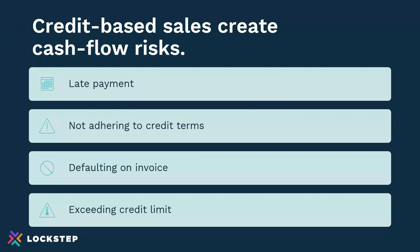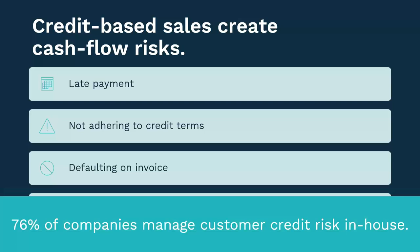Credit-based sales creates cash flow risk for the following reasons. The inflow needs to be ahead of the outflow. Late payments are simply the number one and often most frustrating reason for cash flow shortfalls — and that's the number one reason that companies close their doors. Not adhering to credit terms can also be an issue. Customers may decide to pay by check rather than the agreed-upon electronic method, delaying when cash moves from their account to yours. Customers could simply default by refusing to pay, possibly over a dispute or because of their own liquidity issues. Not keeping customers within their credit limits has increased the risk of late payments. Currently, 76% of companies manage their credit risk in-house, meaning they're underwriting this by setting their own terms.